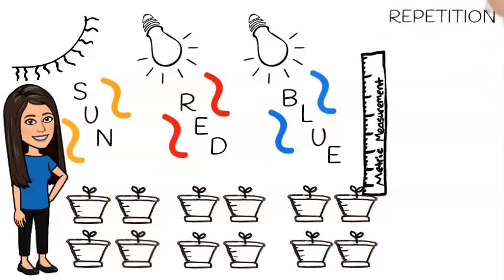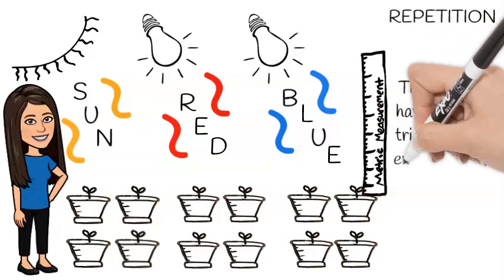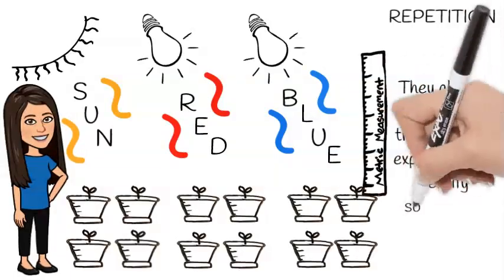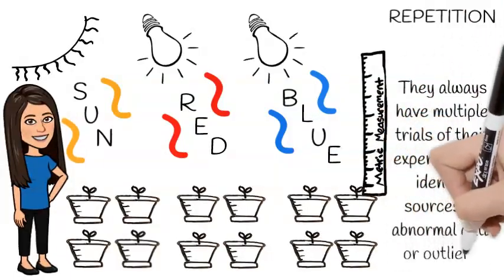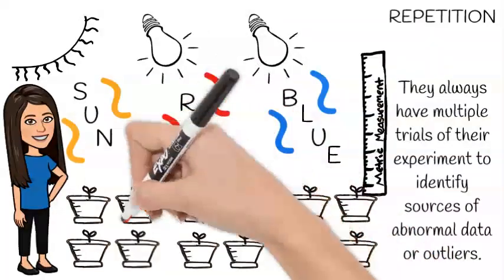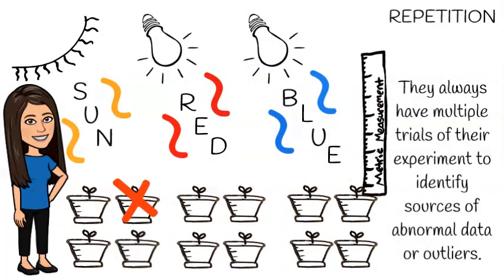Scientists prepare for situations like this by using repetition in their experiments. They always have multiple trials of their experiment to identify sources of abnormal data or outliers. So if this plant doesn't grow, there's still three others to get data from.